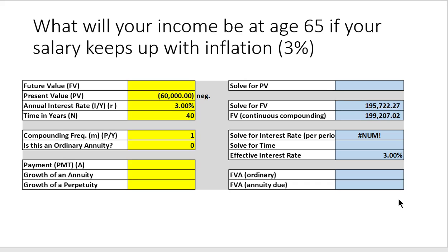This is kind of hard to swallow, but with inflation, $195,722 equals — adjusted for inflation — $60,000 in today's terms. So we're going to need to make a lot of money, because I need to earn this amount every year of my retirement life.